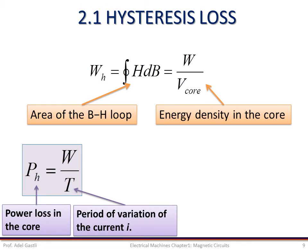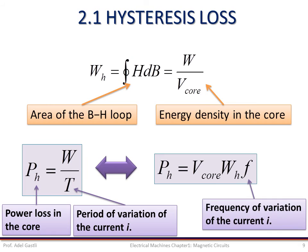The power loss in the core due to the hysteresis effect can be calculated as the ratio of the energy transfer over the current cycle period T. Replacing the energy transfer by its expression as a function of the volume of the core and the area of the hysteresis loop, and taking the frequency of current variation f instead of the period T, we can rewrite the expression of the hysteresis power loss accordingly.